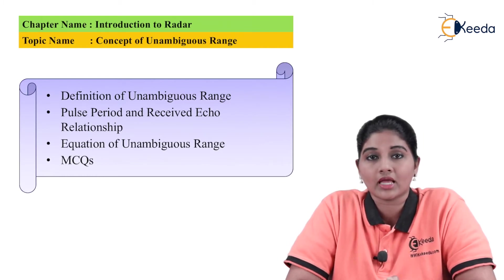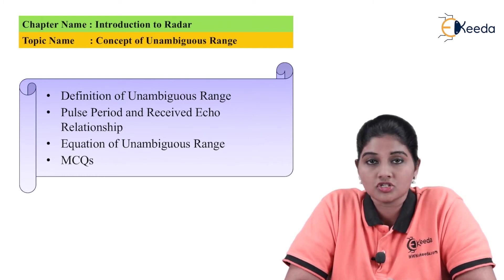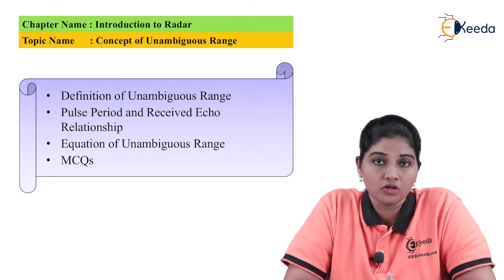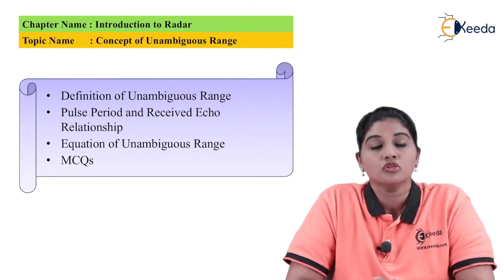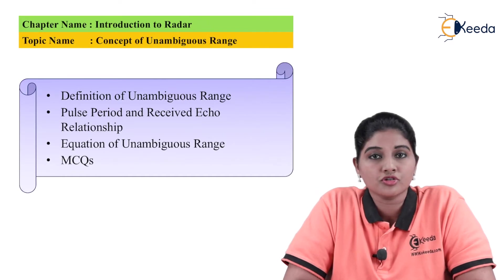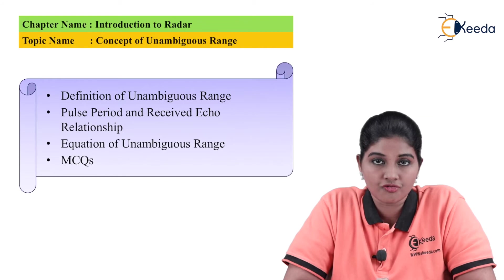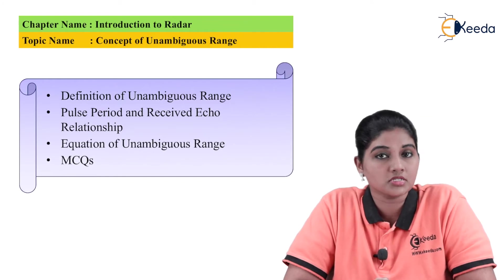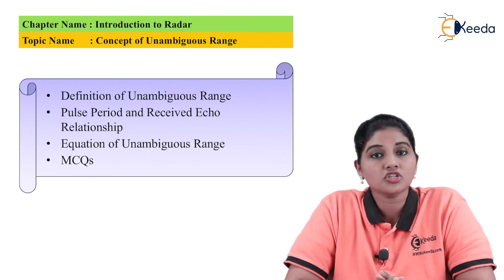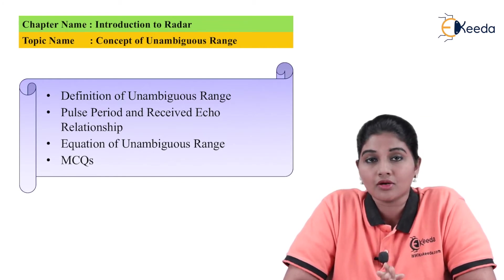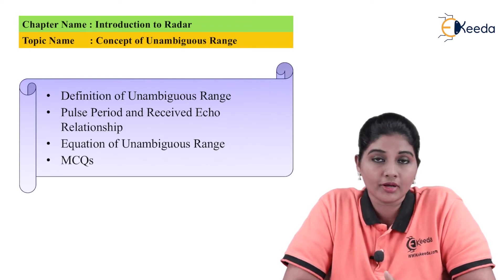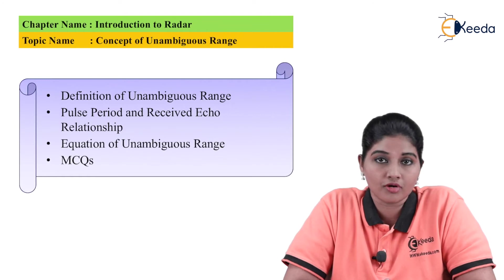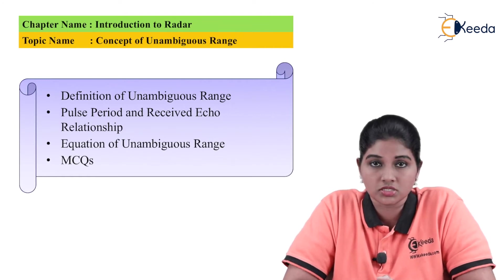The formula used for calculating range provides an approximate value, which may vary in practice. Here we introduce an important term: pulse repetition frequency (PRF), also called pulse repetition rate. The PRF is the rate at which the radar transmits pulses, or equivalently the maximum number of pulses obtained at the output of the radar.